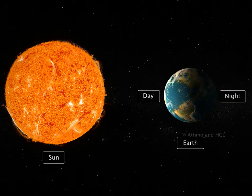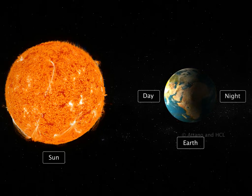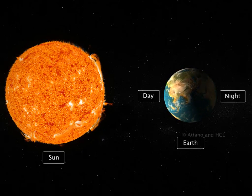So, the sun does not disappear. It's due to the movement of the earth that there is day and night.